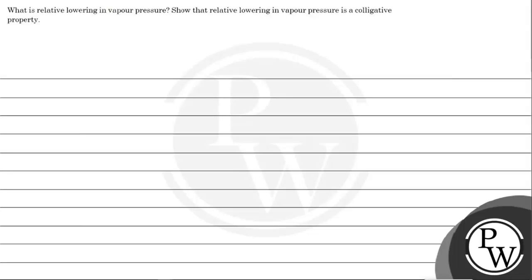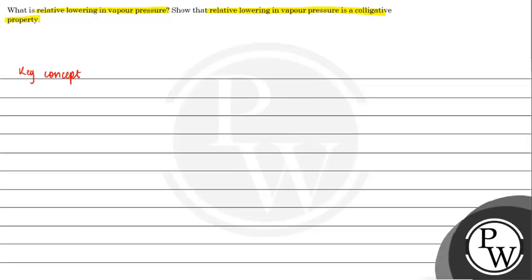Let's read this question. What is Relative Lowering in Vapor Pressure? So the Relative Lowering in Vapor Pressure is a Colligative Property. Let's write the key concept of this question. The key concept of this question is a Colligative Property definition.